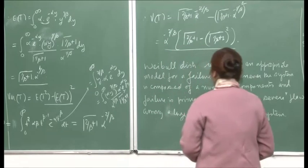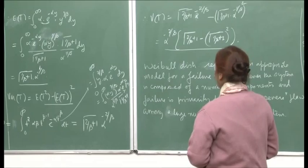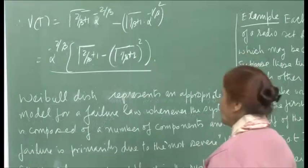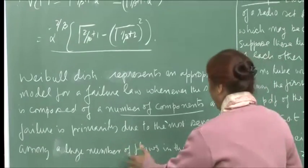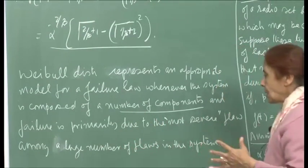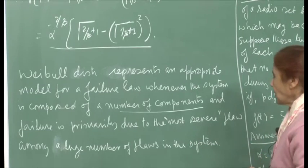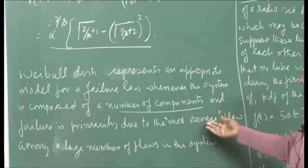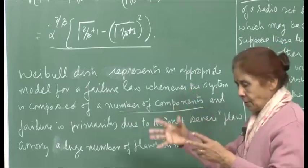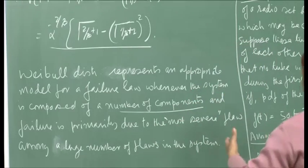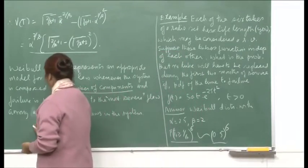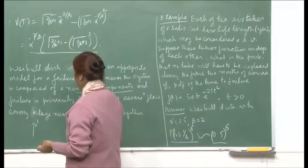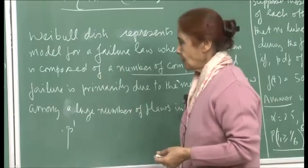The Weibull distribution represents an appropriate model for the failure law whenever the system is composed of many components, and the failure is primarily due to the most severe flaw among a large number of flaws in the system. By changing the values of β, you can have either an increasing, constant, or decreasing failure rate — making it a more complex and comprehensive failure law that captures more than one situation.